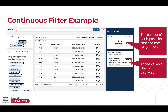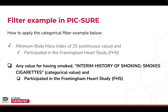We have applied a filter to the variable, so the number of participants has changed from over 240,000 to 716. Additionally, we can see that the filter was added in the Added Variable Filters box. We have now applied a filter to the continuous variable.